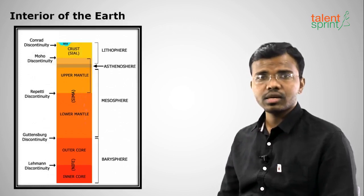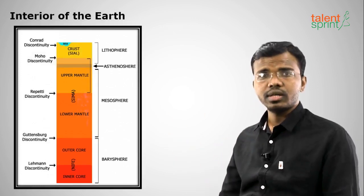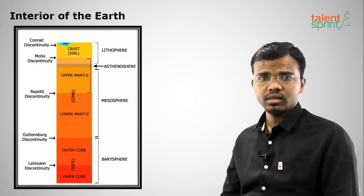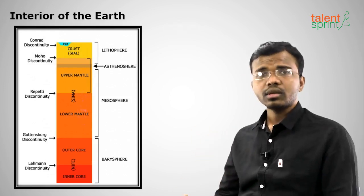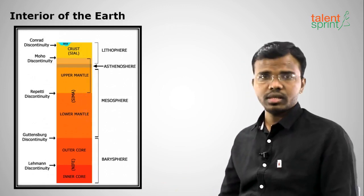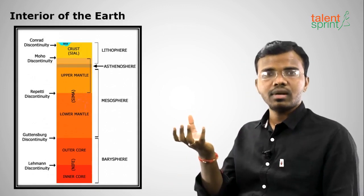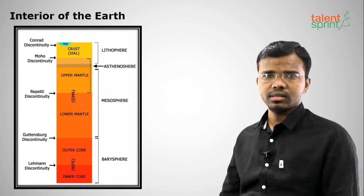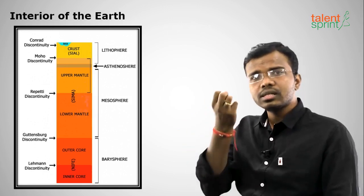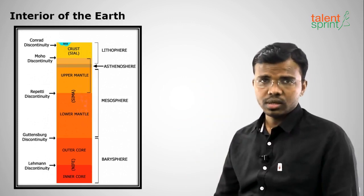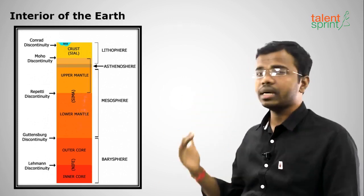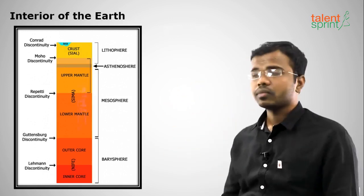Moving on to what is inside the Earth — the interior of the Earth. There are different layers which were differentiated based upon density. Higher density layers are at the lower stage: the core has the highest density, the mantle has lesser density, and the crust has the least density. Denser particles settle down and lighter particles float up — that is how these layers separated.